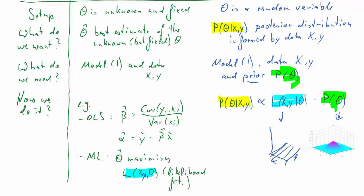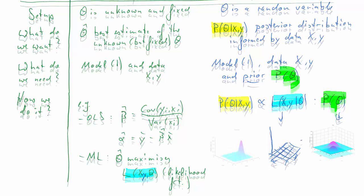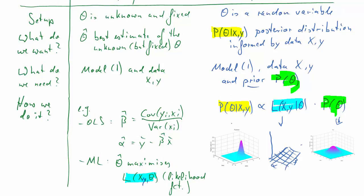For each value of alpha and beta, we can calculate that value. Then we multiply these two things together, and what you get then is what's called the posterior distribution, and that's a distribution again.